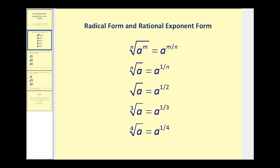Let's first review radical form versus rational exponent form. The nth root of a to the m power is equal to a to the power of m divided by n. So if we have the nth root of a, in rational exponent form we'd have a to the power of one divided by n.